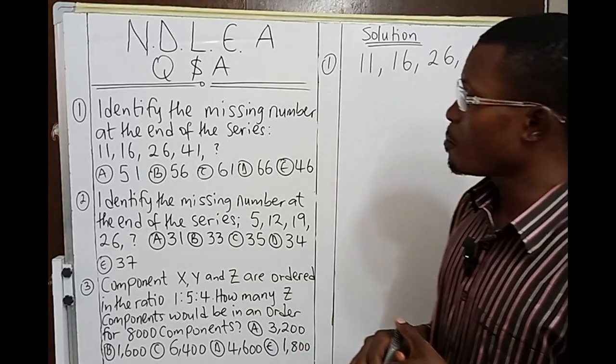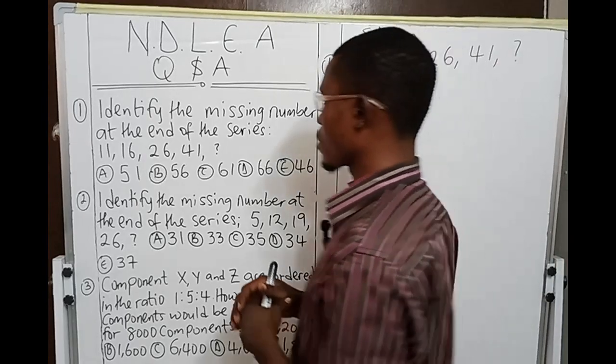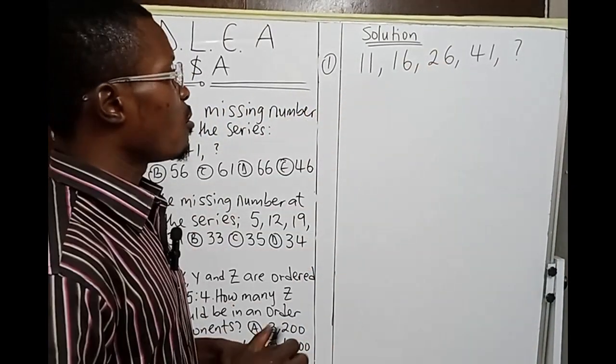Number one: Identify the missing number at the end of the series: 11, 16, 26, 41.